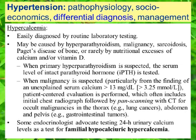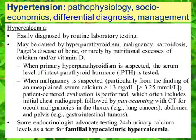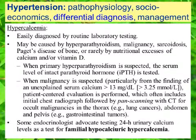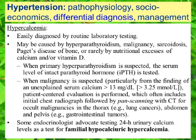Hypercalcemia can also cause hypertension and is easily diagnosed by routine laboratory testing. Causes include hyperparathyroidism, malignancy, sarcoidosis, Paget's disease of bone, or very rarely nutritional excess of calcium and/or vitamin D. When primary hyperparathyroidism is suspected, serum intact parathyroid hormone (iPTH) is tested. When malignancy is suspected — particularly with an unexplained serum calcium greater than 13 milligrams per deciliter — a patient-centered evaluation is performed.